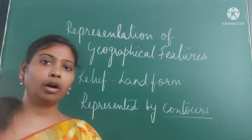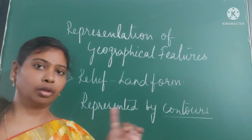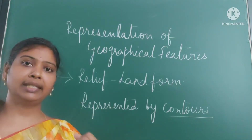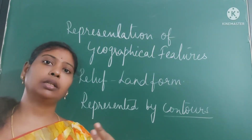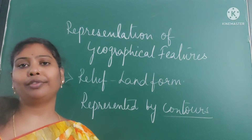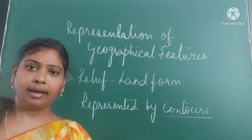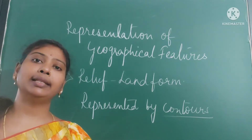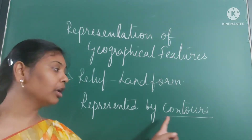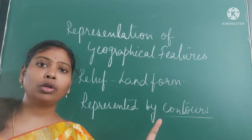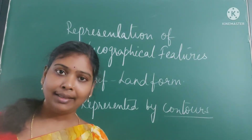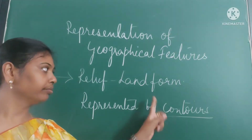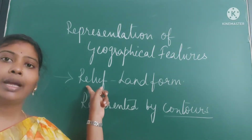We all know landforms. These landforms are known as relief. Plains, plateaus, mountains — any kind of landform is known as a relief. On a map, this kind of landform is shown with the help of contours. Contours are curved lines which show the relief.